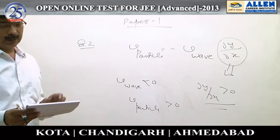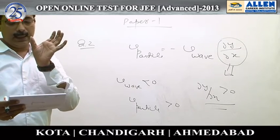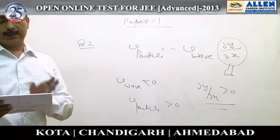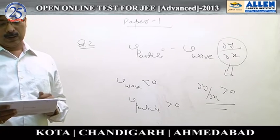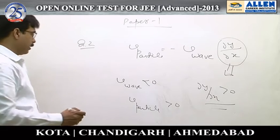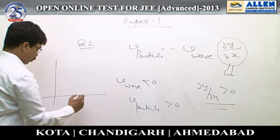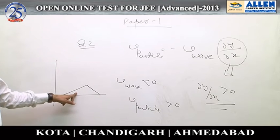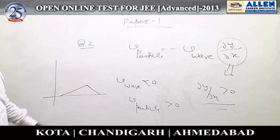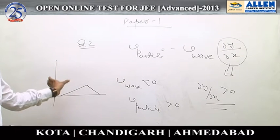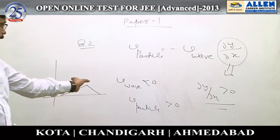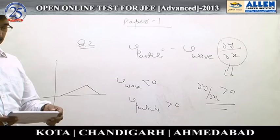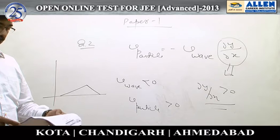According to the graph, the width of the pulse in the first half is more than the width of the pulse in the second half. So option A is the most appropriate answer. In the first part the slope is positive, in the second part slope is negative, and the width of the pulse is smaller in the second part.